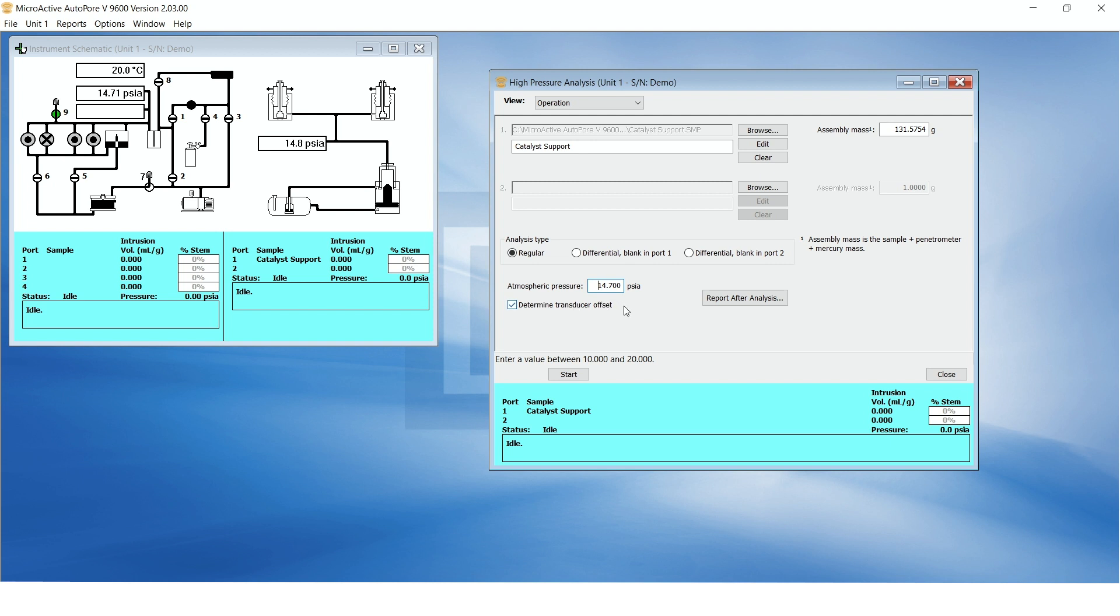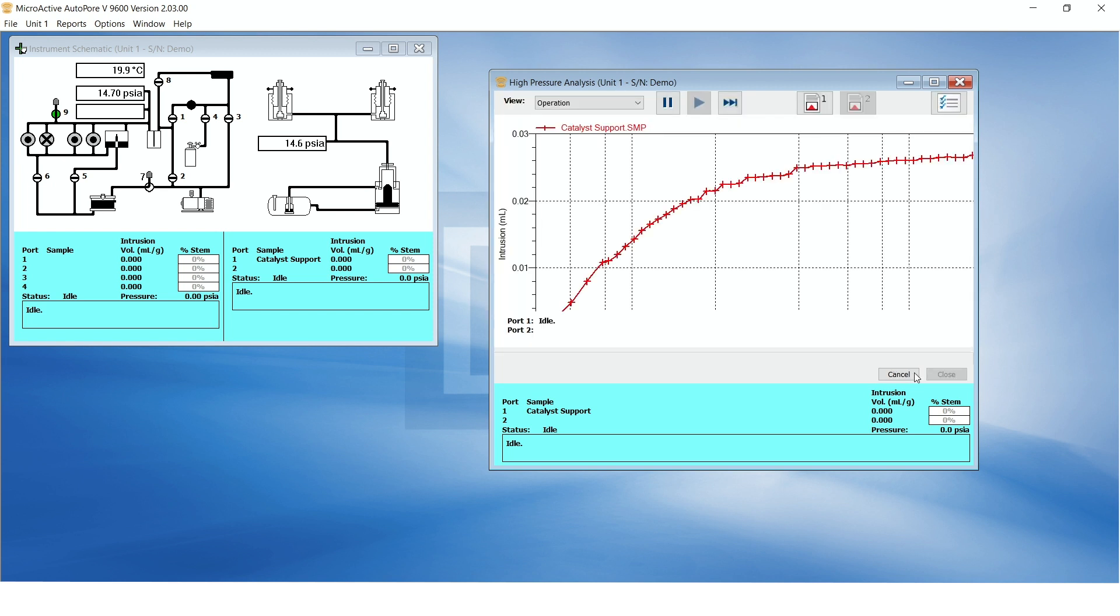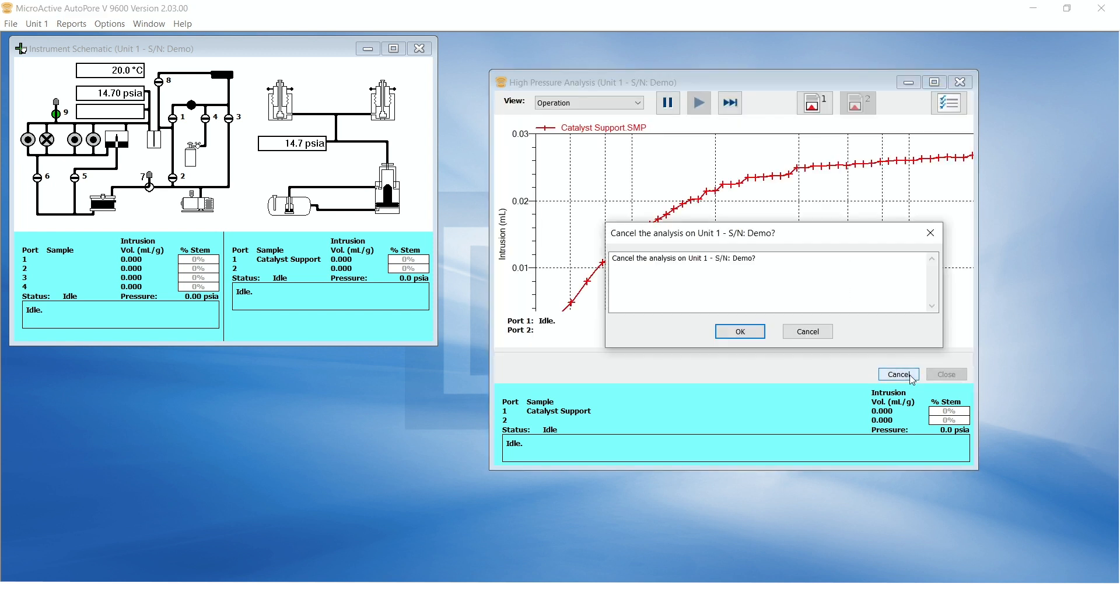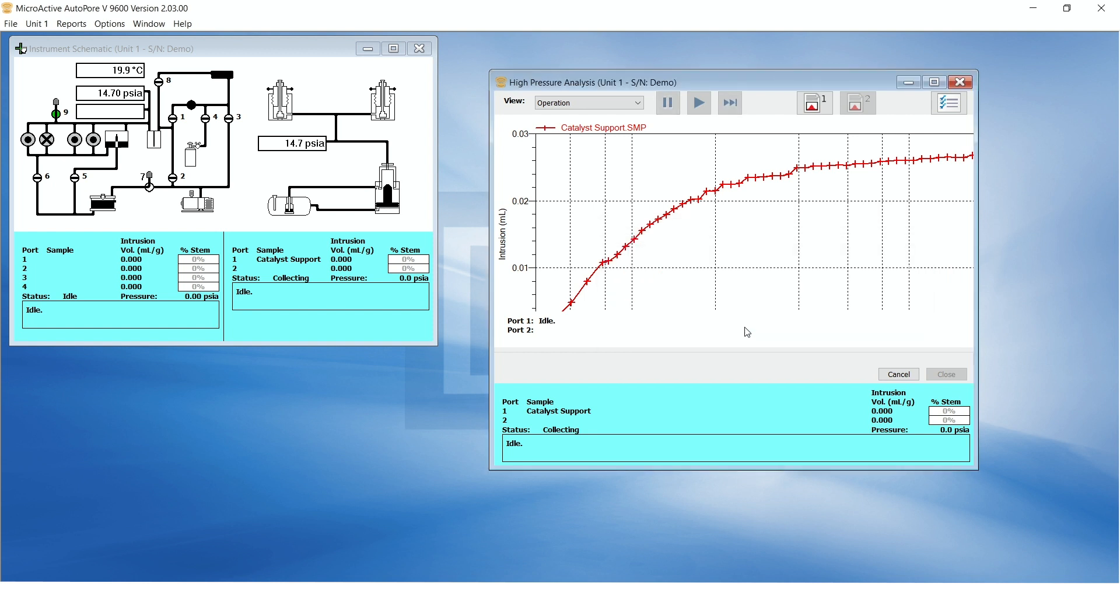Make sure that the determined transducer offset box is checked and enter the stable value for atmospheric pressure. Now click on start to resume the analysis of our alumina catalyst support sample. At an appropriate time, the software will instruct you to close the vent valves. Do so and click on OK to continue.